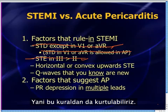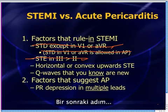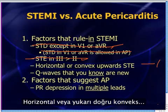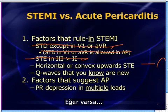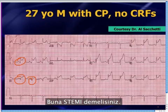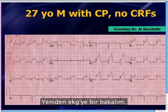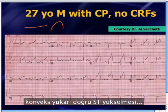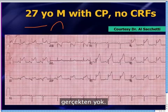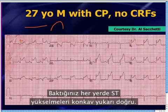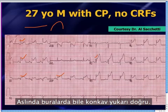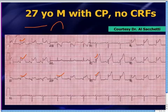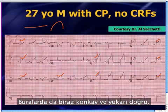Next step: is there any horizontal or convex upwards — tombstone type — ST elevation? If there is, you've got to call this a STEMI. Looking at this 12-lead, there really is not. Everywhere you look, the ST segments are concave upwards — concave upwards in every lead. So this rule is also not helpful here.